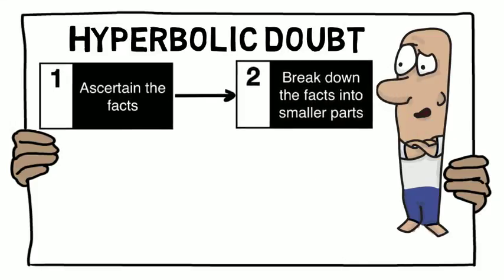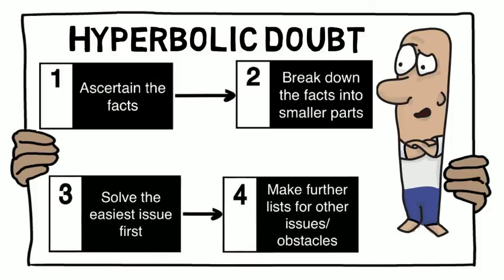So we have: ascertain the facts, break down the facts into smaller parts, solve the easiest issue first, and make further lists for other issues or obstacles.